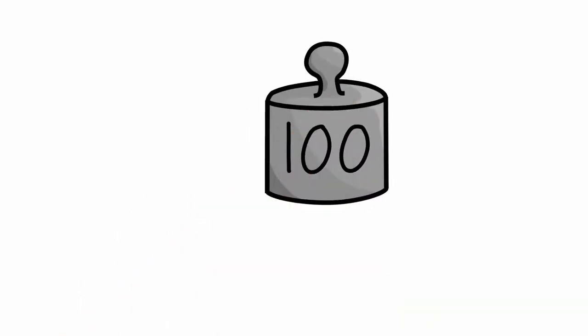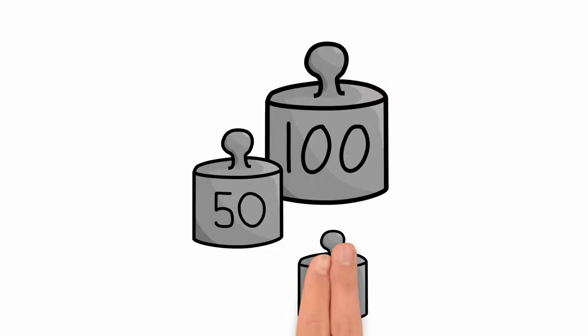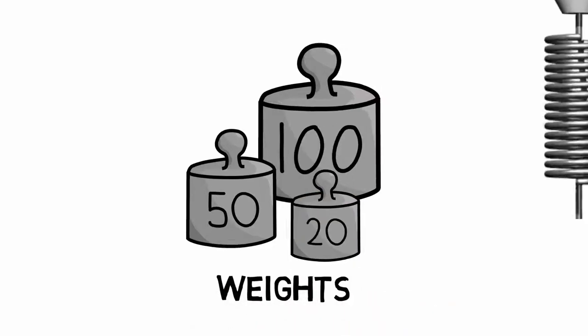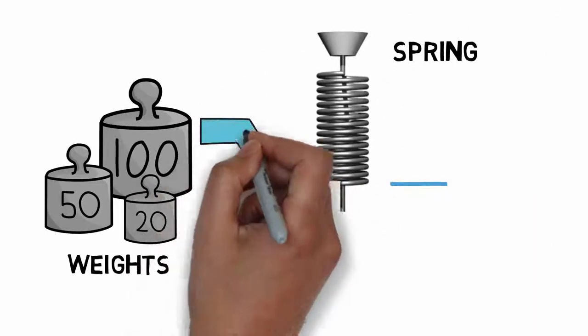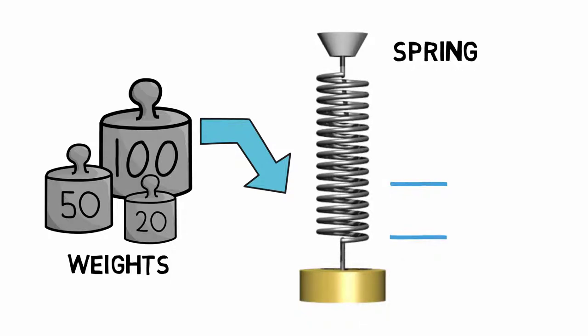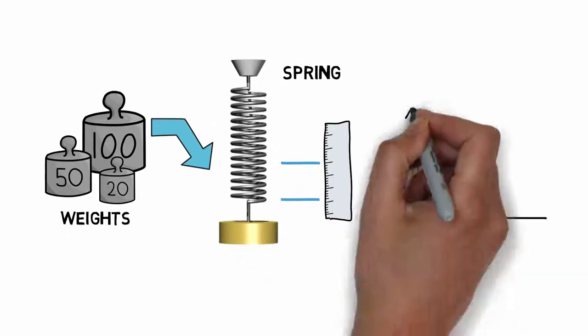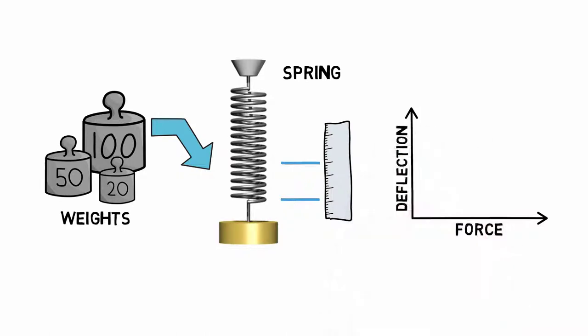Instead, let's use weights of different sizes so we know exactly how much force is applied to the spring. At the same time, we can measure the length of the spring as it deforms under the applied weight. We can then plot that data in a graph and see if there's a relationship.